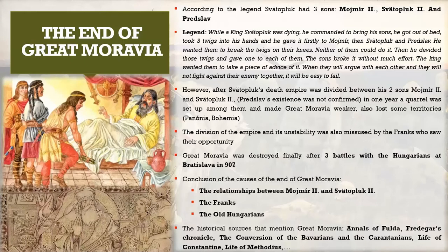I'll also tell you about the end of Great Moravia. There is the famous legend about Svätopluk and his three sons: Mojmír the Second, Svätopluk the Second, and Pretzlau. When Svätopluk was dying, he brought his sons three twigs bundled together — none of them could break the bundle. Then he gave one twig each and they broke them easily, warning that if they quarrel instead of fighting their enemy together, they will fail as rulers.